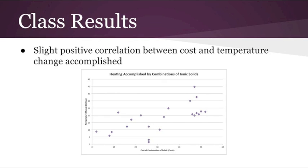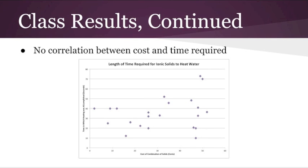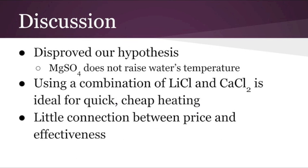The class data did not demonstrate many definite trends between cost, temperature change, and time. However, it did show a slight positive correlation between the cost of a combination of ionic solids and the temperature change it produced, as shown in this graph. As shown here, there was no correlation between the cost of a combination and the time required for the heat change produced.